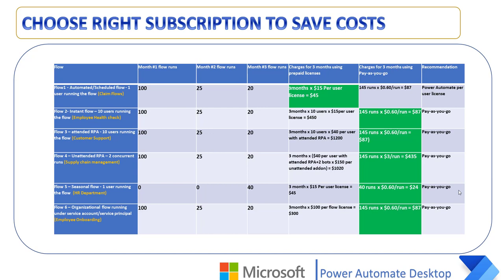Scenario six involves organization flows running under a service account or service principal — for example, employee onboarding. Month one has 100 runs, month two has 25 runs, and month three has 20 runs. Using the per flow plan at $100 per flow over three months costs $300. With pay as you go at 145 runs × 60 cents, the total is $87 for the entire quarter. Again, we recommend pay as you go.